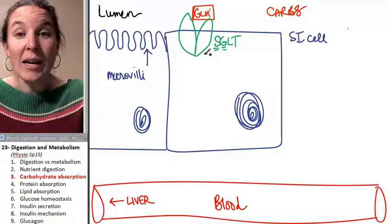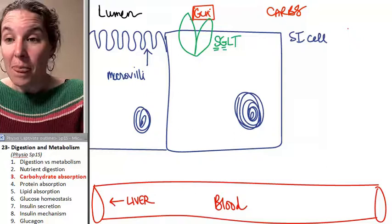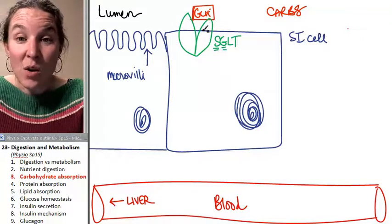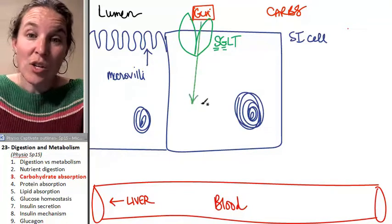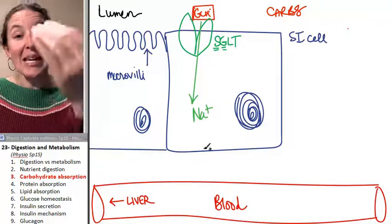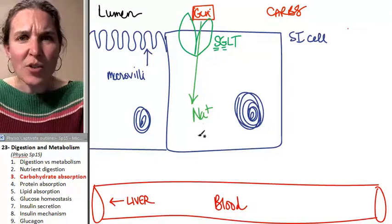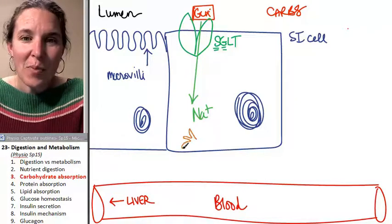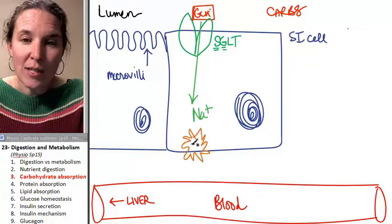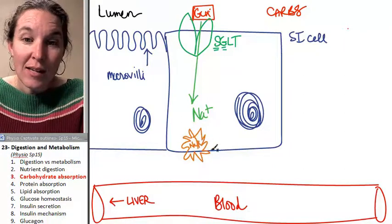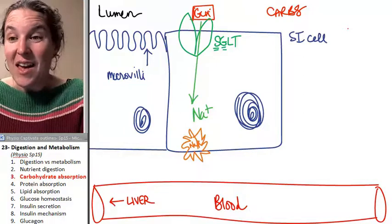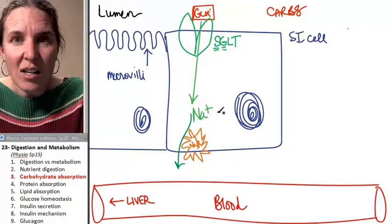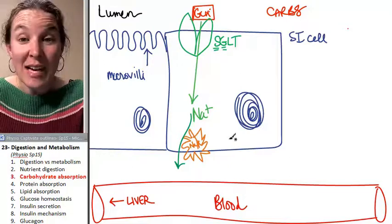SGLT operates by taking glucose against a concentration gradient by moving sodium down a concentration gradient. So sodium is coming into the cell through SGLT, down its concentration gradient. If you want a sodium concentration gradient, what are you going to have to do? You're going to have to pump sodium out of the cell. Who's this? Yes, indeed, that's your sodium potassium pump. The sodium potassium pump is going to send sodium out, creating a concentration gradient inside of this cell.